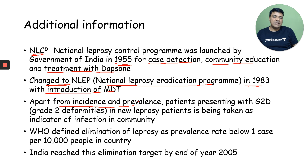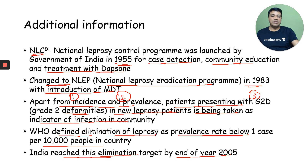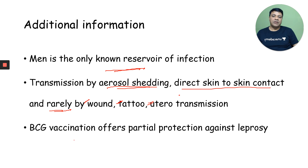Apart from incidence and prevalence, grade two deformities in new leprosy patients are taken as an indicator of infection in the community — giving three indicators: incidence, prevalence, and grade two deformity. WHO defined elimination of leprosy as a prevalence rate below one case per 10,000 people; India reached this elimination target by the end of 2005. Man is the only known reservoir of infection; transmission is by aerosol shedding, skin-to-skin transfer, and rarely by wounds, tattooing, and in-utero transmission. BCG vaccination offers partial protection against leprosy.